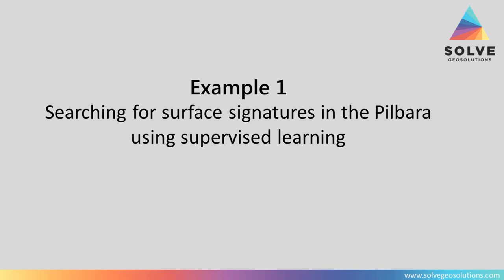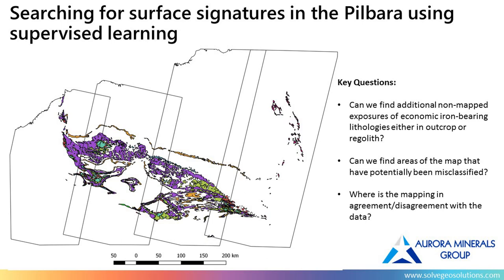Now for some examples of how we're using this. The first is a supervised learning example where we're trying to predict a class. We're searching for particular surface signatures in the Pilbara, and those signatures come across a bunch of remote sensing and geophysical datasets. The study area is the entire Pilbara craton — about 500–600 km wide and 350–500 km high. The client wanted to assess whether the existing 250k map sheets were accurate, identify where they might not be good, and find areas that could be misclassified.